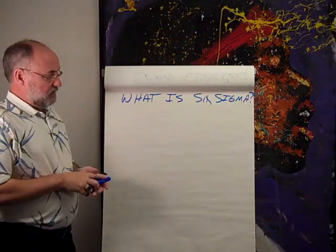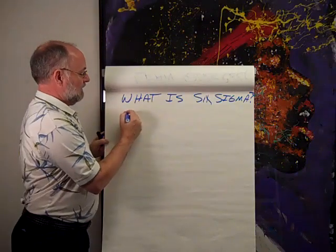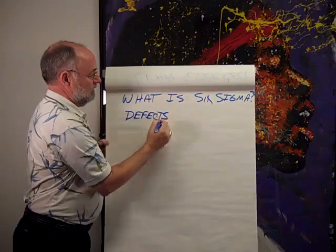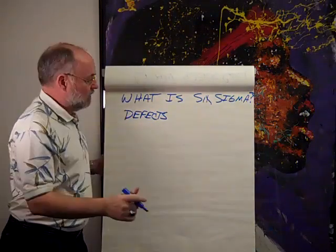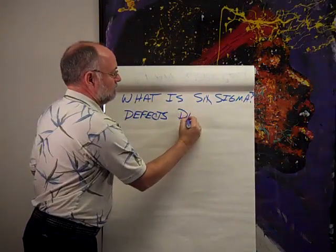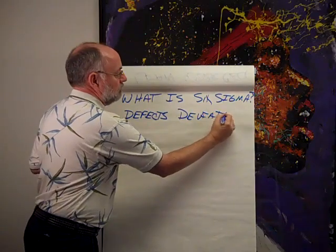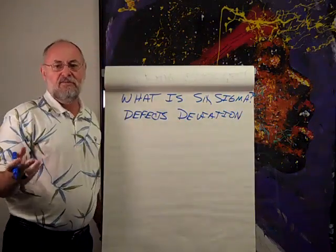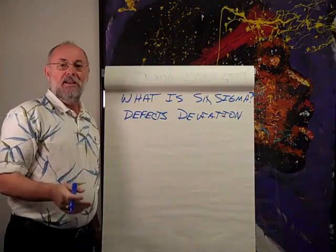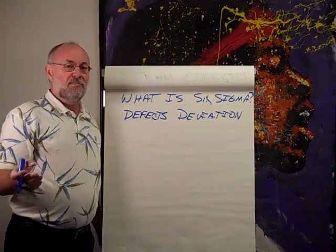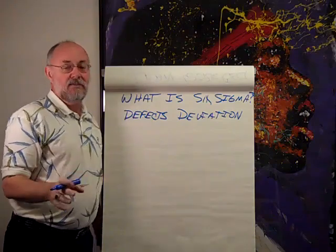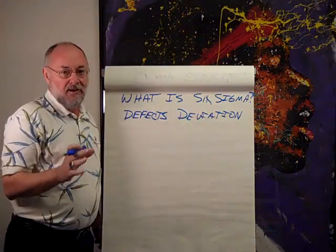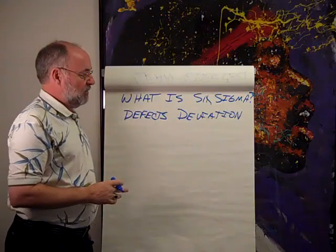We have two sides of this coin. On one side is defects — there is a mistake somewhere. And there is deviation. In Six Sigma, we talk about variation; we want to reduce variation. But variation is such a benign term, I just call it deviation. So we have delay, defects, and deviation. These are some of the big demons in our problem-solving process.